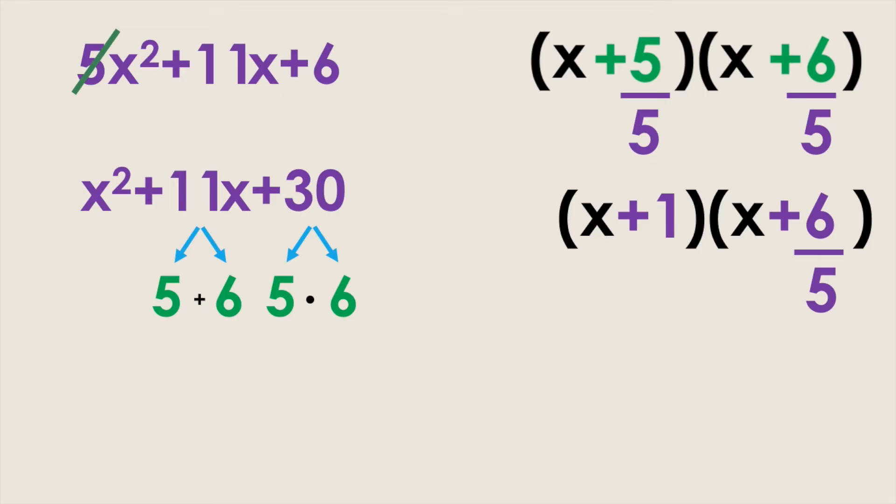Lastly, any numbers left in the denominator after you've fully simplified your fraction are going to be brought in front of the x in that set of parentheses. So our final factored form is x plus 1 times 5x plus 6.